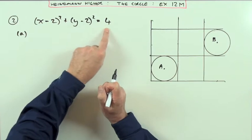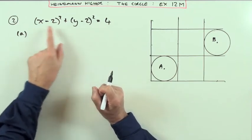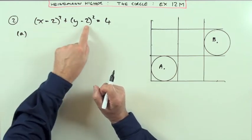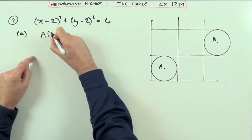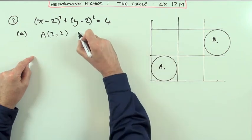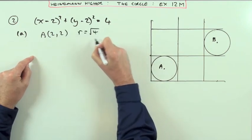You know its center is at (2,2). I'll just call that the point A there, so A is at (2,2). And I know its radius is four - sorry, the square root of four - and its radius is two. That's the first part there.